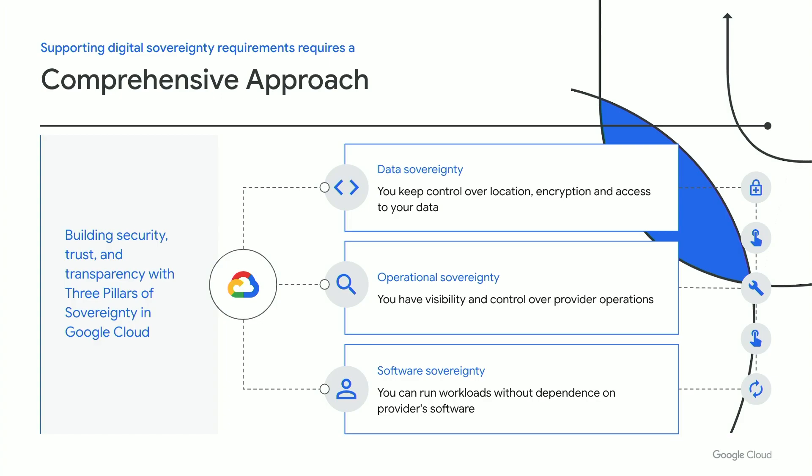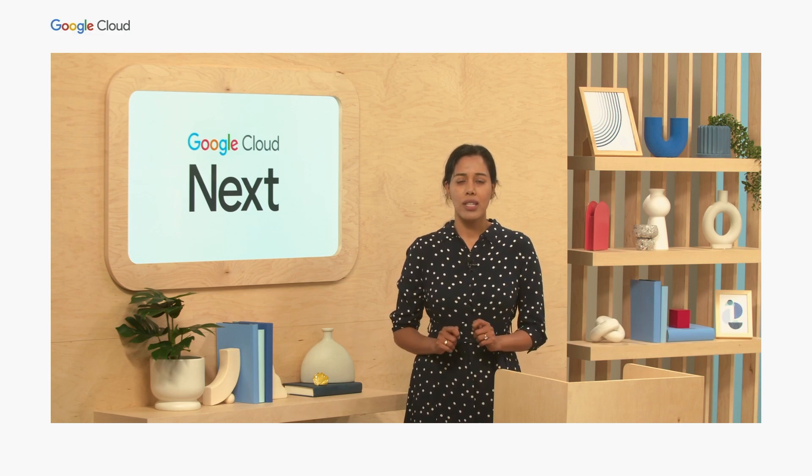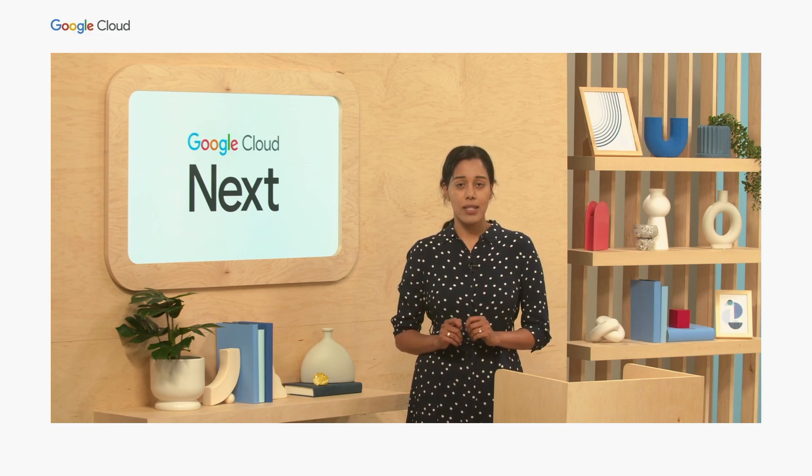Last but not least, there's software sovereignty, often referred to as survivability. This means protection against unforeseen catastrophic events. We believe that software sovereignty and survivability can only be accomplished with a modern open cloud approach that's truly based on open source solutions. This is why Google has committed very strongly to an open cloud, and we have based many of our core cloud services in computing and data management on open source solutions.